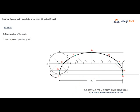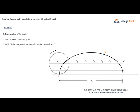Step 2: Mark a point Q on the cycloid. Step 3: With C-P distance, cut an arc on the locus of C and name it O.